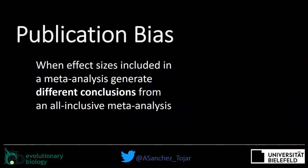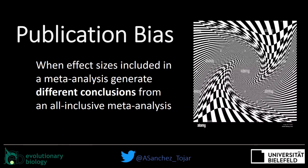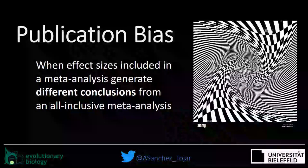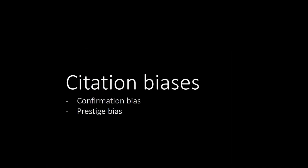Overall, we could consider publication bias as whenever the effect sizes included in a meta-analysis generate a different conclusion from what a meta-analysis including all existing effect sizes would lead to. This normally leads to some distortion for whatever hypothesis we're interested in. Today I'm going to categorize publication biases into three types: citation biases, small study effects, and decline effects.